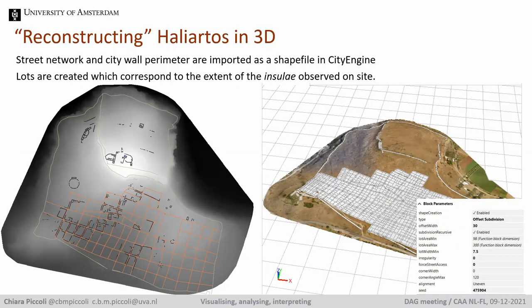I'm reusing and adapting the set of rules created for Koronia for another ancient town, Haliertos. This will give us interesting information to compare as well as the possibility to refine the rules. The investigation of the hill of Haliertos includes mapping of surface architectural features and artifacts carried out by my colleague Emery Farinetti and her students from the University of Roma 3, followed by geophysics and GPS surveys.